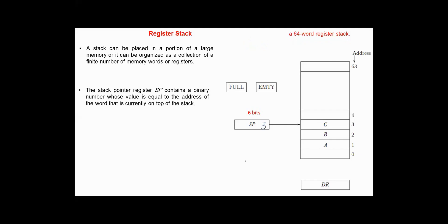To remove an item from the stack, the stack is popped by reading its top, and the contents of the stack pointer should be decremented by one. To insert a new item, for example D, the stack is pushed by incrementing the stack pointer and writing a word in the next tier location in the stack, so now the stack pointer points to location four, which is the top of the stack.